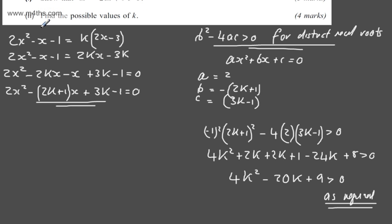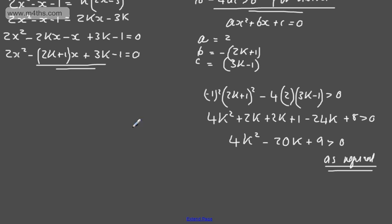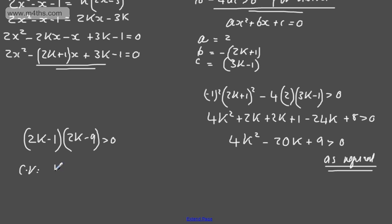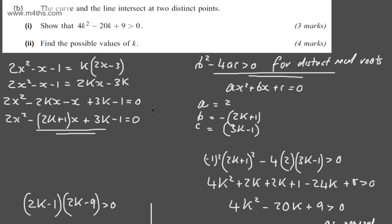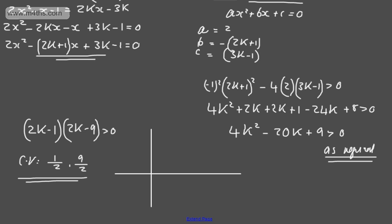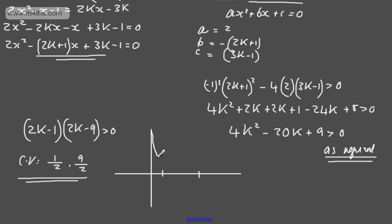In the second part of part B, we need to find the possible values of k. We have the quadratic inequality 4k squared minus 20k plus 9 greater than 0. Factorising gives 2k minus 1 multiplied by 2k minus 9, strictly greater than 0. Checking: 4k squared minus 18k minus 2k plus 9 — correct. The critical values are k equals one half and k equals nine over two. Sketching a quick parabola with roots at one half and nine over two.